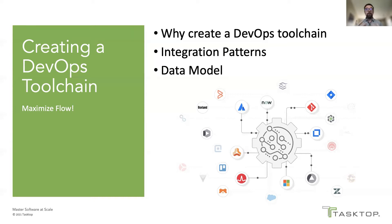I'm going to cover why we should create a DevOps toolchain and the benefits of having one. Then from an implementation perspective, I want to cover some great ways to get started by implementing common integration patterns. And lastly, implementing integration is best done by incorporating a common data model that ingests, normalizes, and synchronizes data across multiple sources.